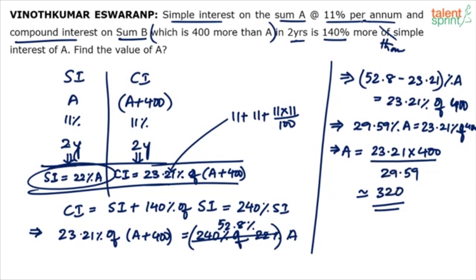Okay. It should be close to 320. It is like 4 fifth. 23 by 29, it is like 4 by 5. 4 fifth of 400 is going to be 320. So approximately 320 is the answer to this question.